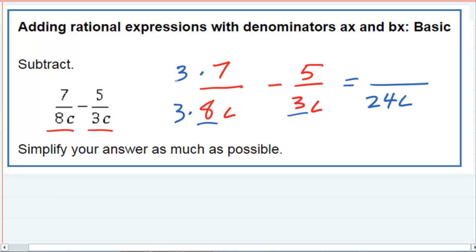So just to rewrite that first expression, that would be 21 over 24c minus, now for this second expression, I have to get a common denominator there as well of 24c. So for the denominator, I would need to multiply by 8, which means I need to also multiply the top by 8. So that would give me a minus 40 in the top and our 24c in the bottom.